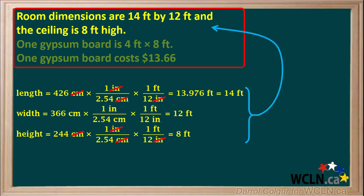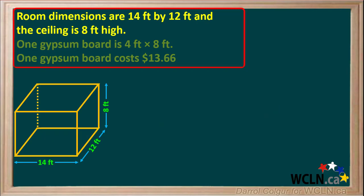We can list these dimensions in feet and use them to make a diagram of the room, showing the length, width, and height. We have two longer walls that are 14 feet by 8 feet, two shorter walls that are 12 feet by 8 feet, and the ceiling, which is 14 feet by 12 feet.